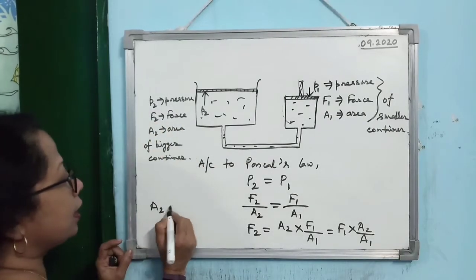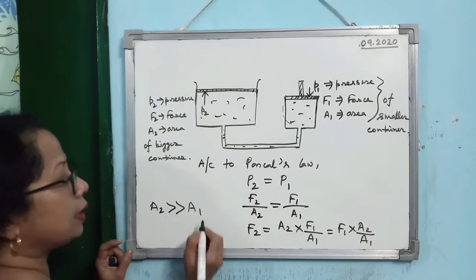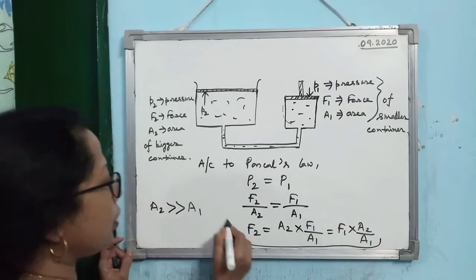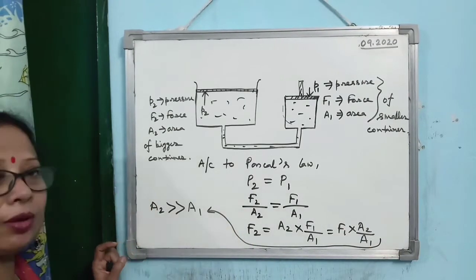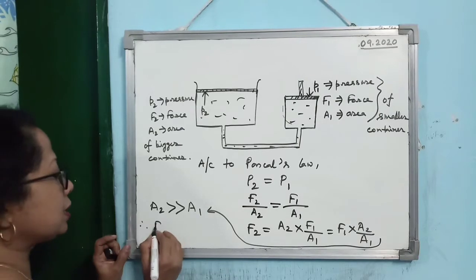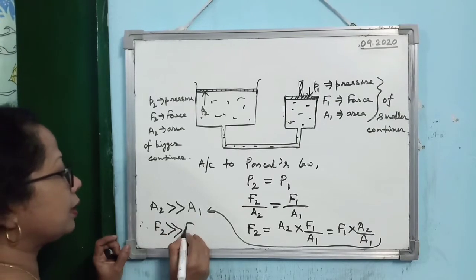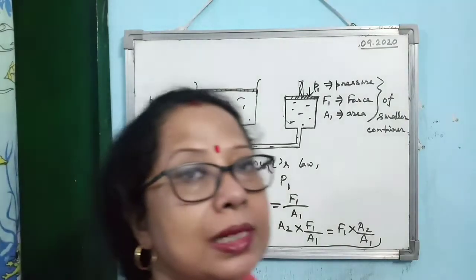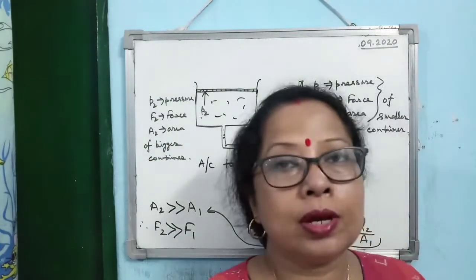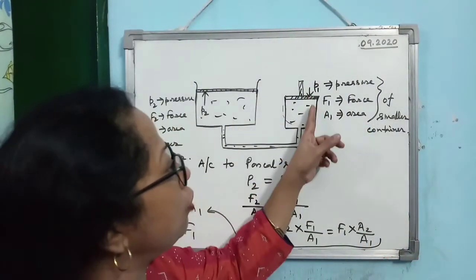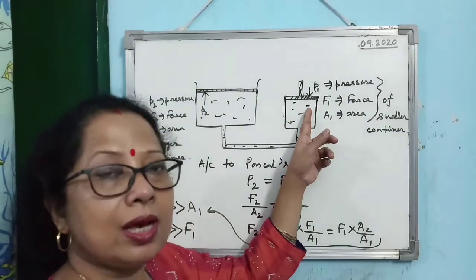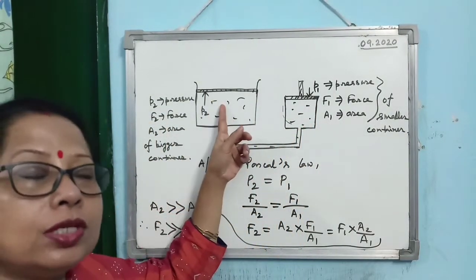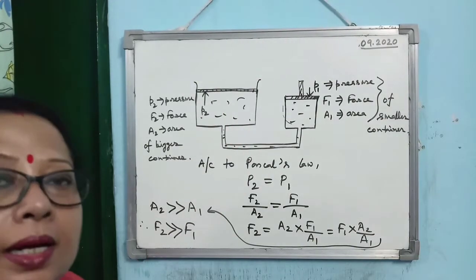Since A2 is much greater than A1, F2 is much greater than F1. This is known as multiplication of force — you apply a small force on the smaller container and receive a large force on the bigger container.